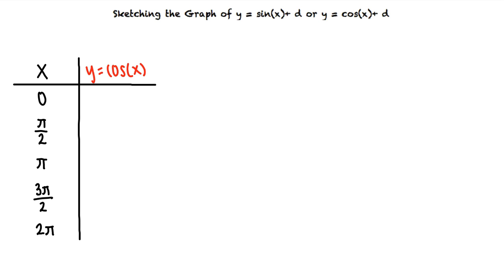So we substitute 0, pi-halves, pi, 3 pi-halves, and 2 pi into our function for x. These inputs give outputs of y equals negative 1, y equals 0, or y equals 1.